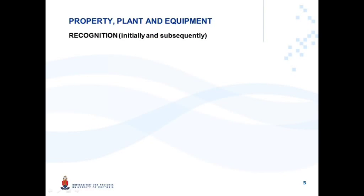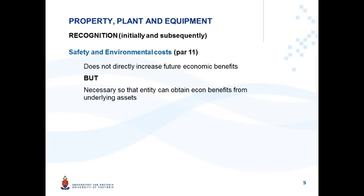Let's quickly summarize. We're busy with recognition. An entity has incurred safety and environmental costs. These costs by themselves do not increase any future economic benefits of an asset. But without them, the entity cannot obtain any benefits from the underlying assets. Therefore, they will qualify for recognition as property, plant, and equipment. But property, plant, and equipment may not be overstated.